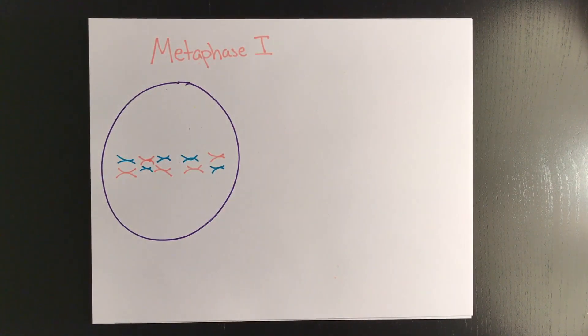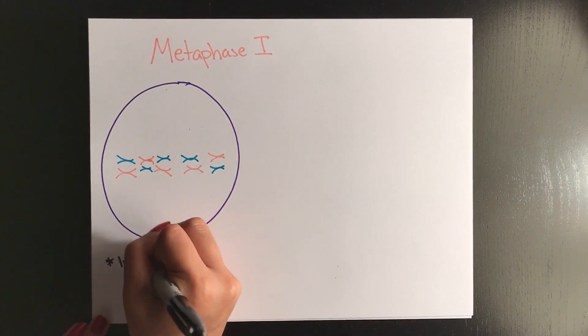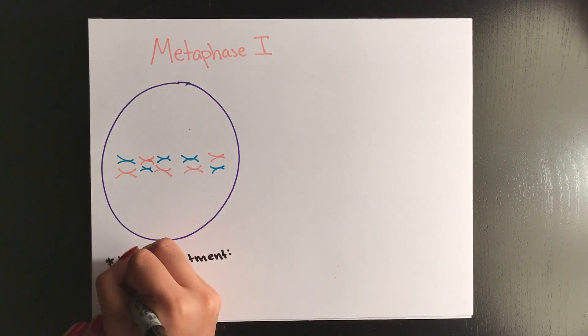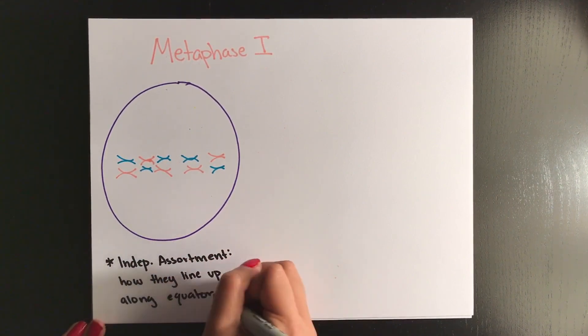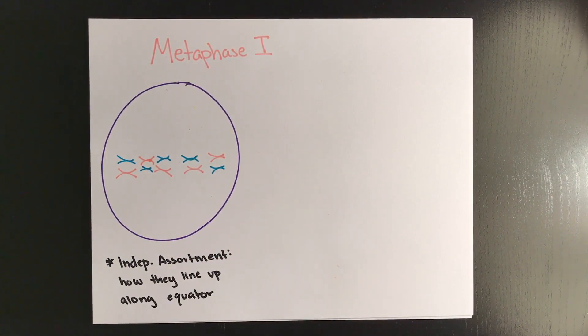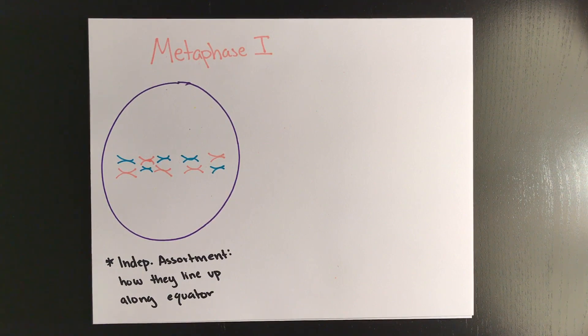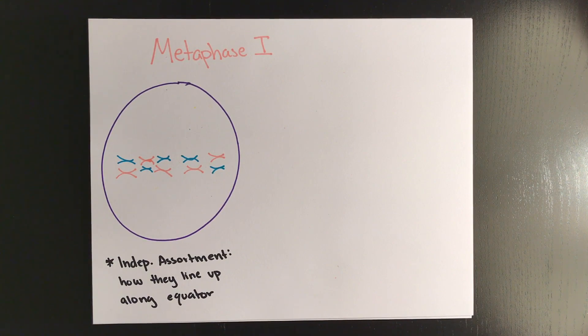During this step, it's important to understand that independent assortment, which is the way the chromosomes will line up, affects the genetic information of each gamete, because the genes of non-homologous chromosome pairs are inherited independently and they're unaffected by other genes. That's basically the definition of independent assortment. Remember to associate that with metaphase 1.